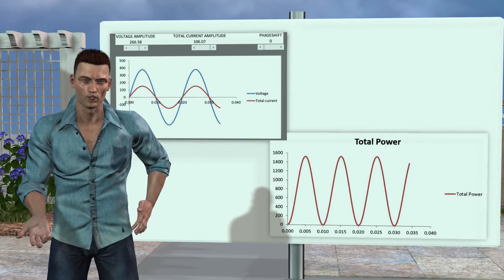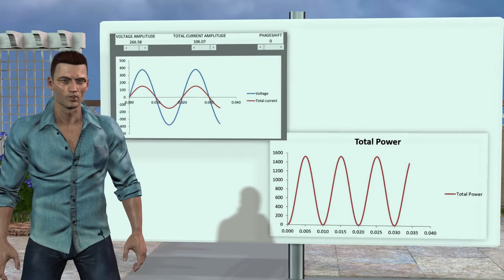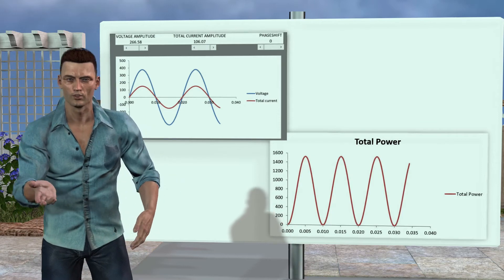This aspect, that the instantaneous power is always greater than or equal to zero, means that in the case of a resistance, at each moment the energy flow is always from the source to the resistance. It never returns energy to the source.